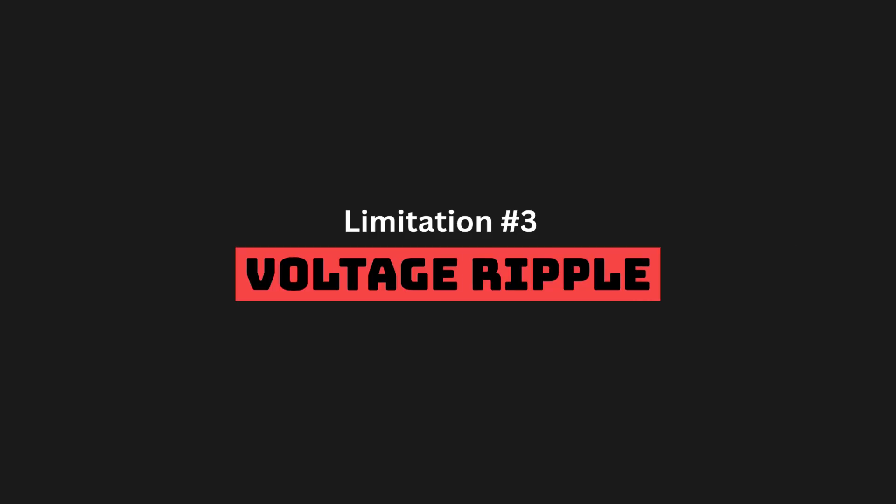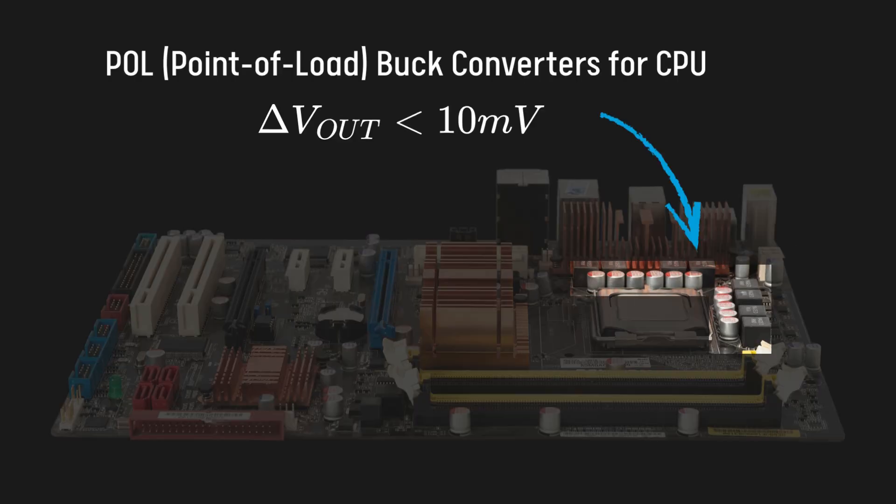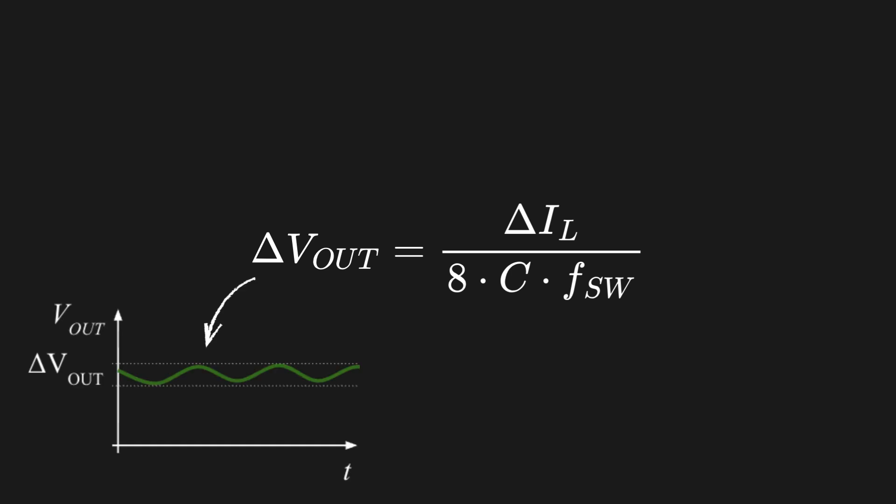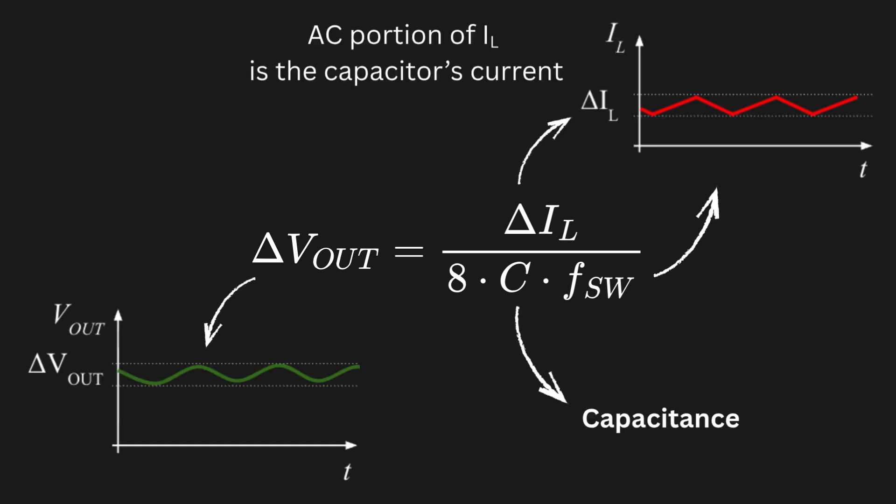On top of that, switching also creates voltage ripples. In certain buck applications, voltage ripples have to be very small. The amplitude of the voltage ripple depends on the capacitor's value, as well as the frequency and amplitude of its current. Because increasing the switching frequency impacts efficiency, there is a limit to the ripple that can be achieved on bucks with a certain size.